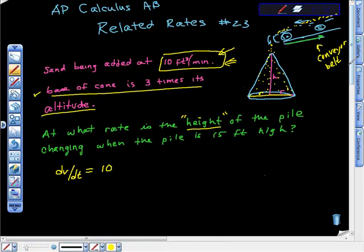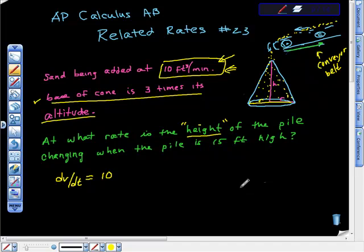Okay, AP Calculus AB related rates problem number 23. The problem reads pretty poorly. It says that sand is falling off a conveyor belt and onto a conical pile at a rate of 10 cubic feet per minute.